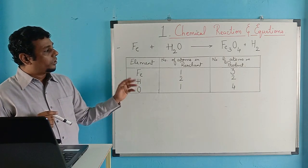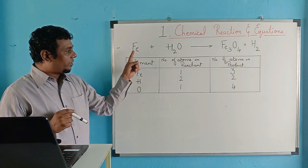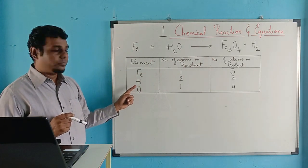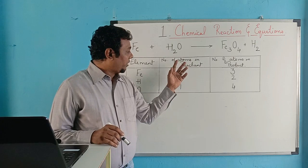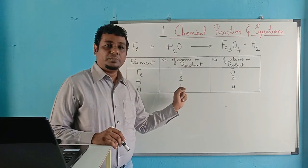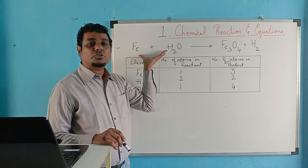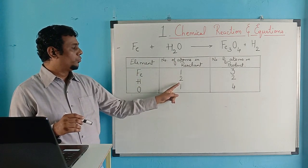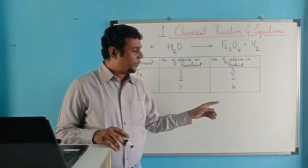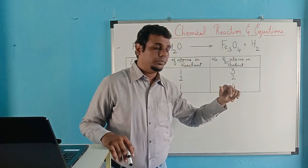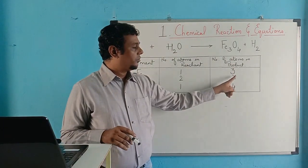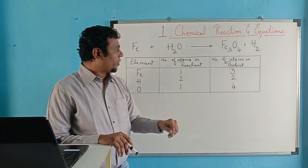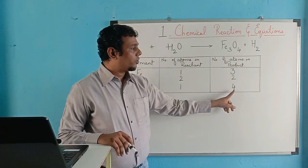First, make a table. The elements in the equation are iron, hydrogen, and oxygen. Write down the number of atoms in the reactant: iron is one, hydrogen is two, and oxygen is one. In the product: iron is three, hydrogen is two, and oxygen is four atoms.